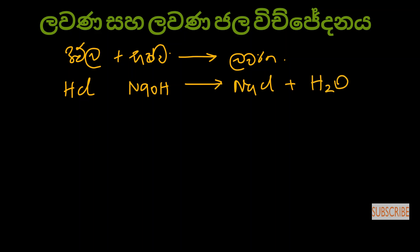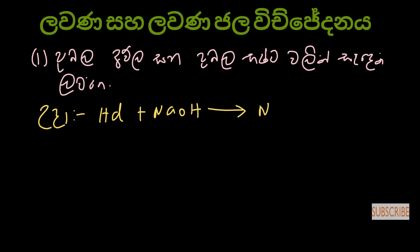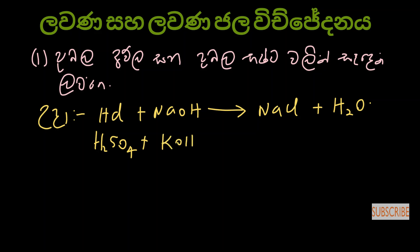So we will be talking about this. The first thing is the relationship between acids and bases, with examples. If HCl reacts with sodium hydroxide, we get sodium chloride. This is an acid-base reaction. Similarly, H2SO4 reacting with potassium hydroxide gives potassium sulfate.